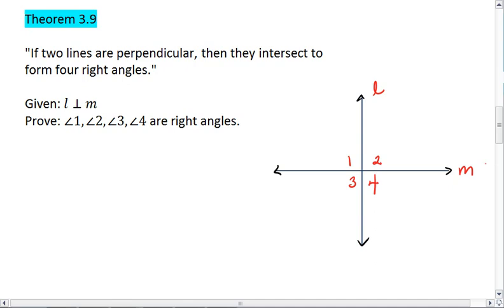we have to prove that angles 1, 2, 3, and 4 are right angles. Well, right away, we'll know that 1 is a right angle. So let's start constructing this proof.